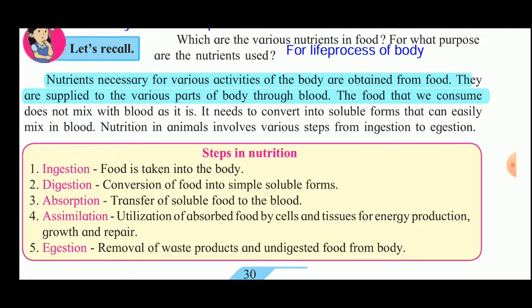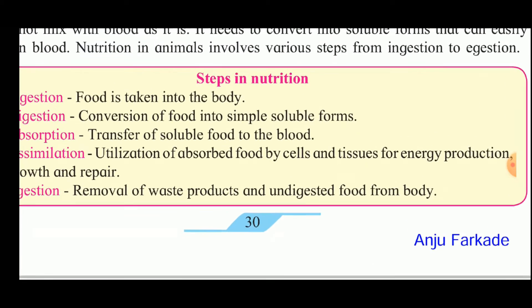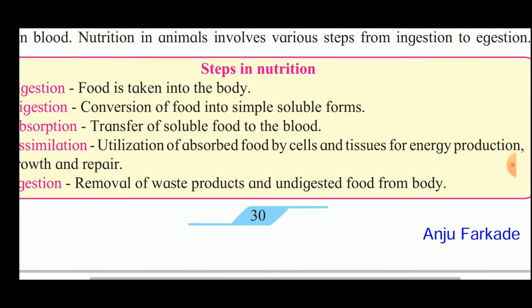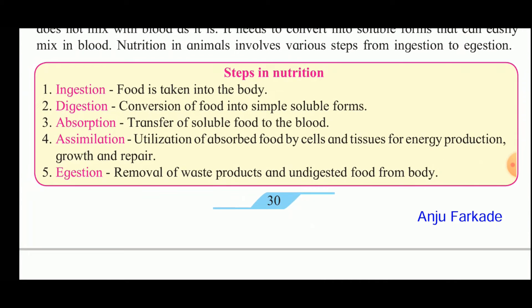Nutrition in animals involves various steps from ingestion to ejection. The steps in nutrition are: first, ingestion — food is taken into the body; second, digestion — conversion of food into simple soluble forms; third, absorption — transfer of soluble food to the blood; fourth, assimilation — utilization of absorbed food by cells and tissues for energy production, growth, and repair; and fifth, ejection — removal of waste products and undigested food from the body.